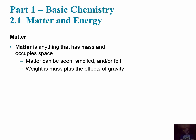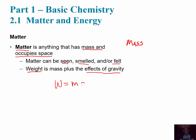Matter is a vocabulary word for this chapter — it is anything that has mass and occupies space. Mass is just a measure of the amount of matter in an object. Matter can be seen, smelled, or felt. Weight is a different quantity from mass. Mass is how much material you have in an object, while weight is the force due to gravity. Weight equals mass times the acceleration due to gravity.